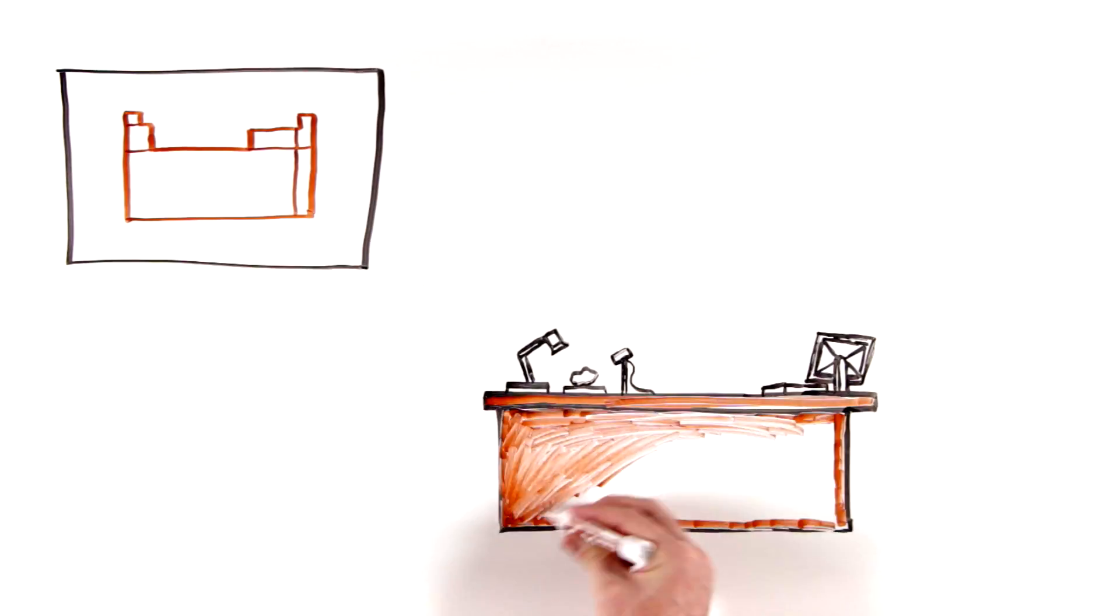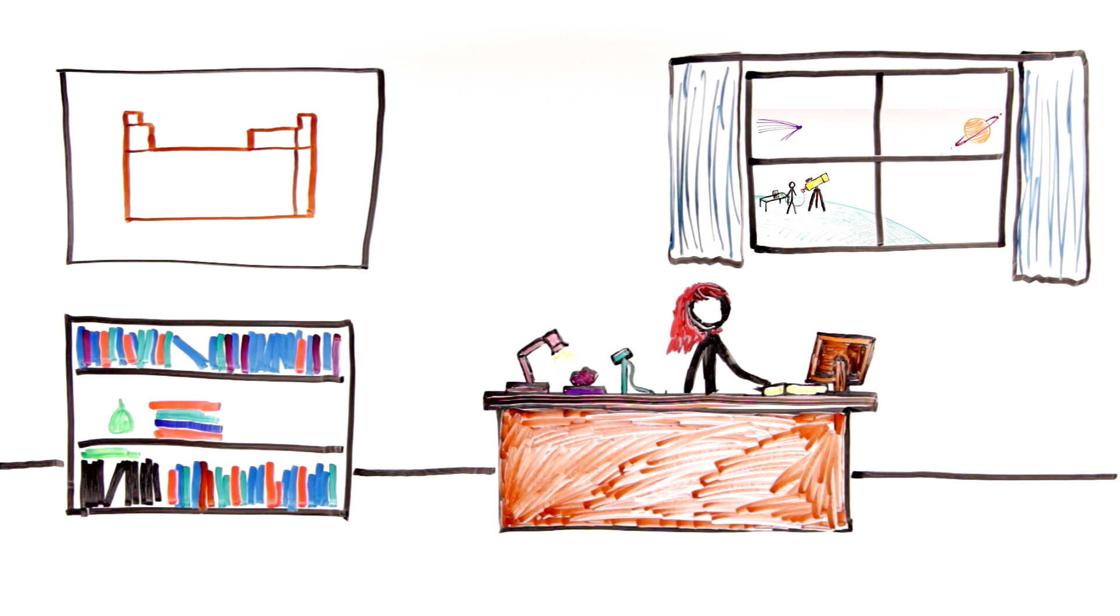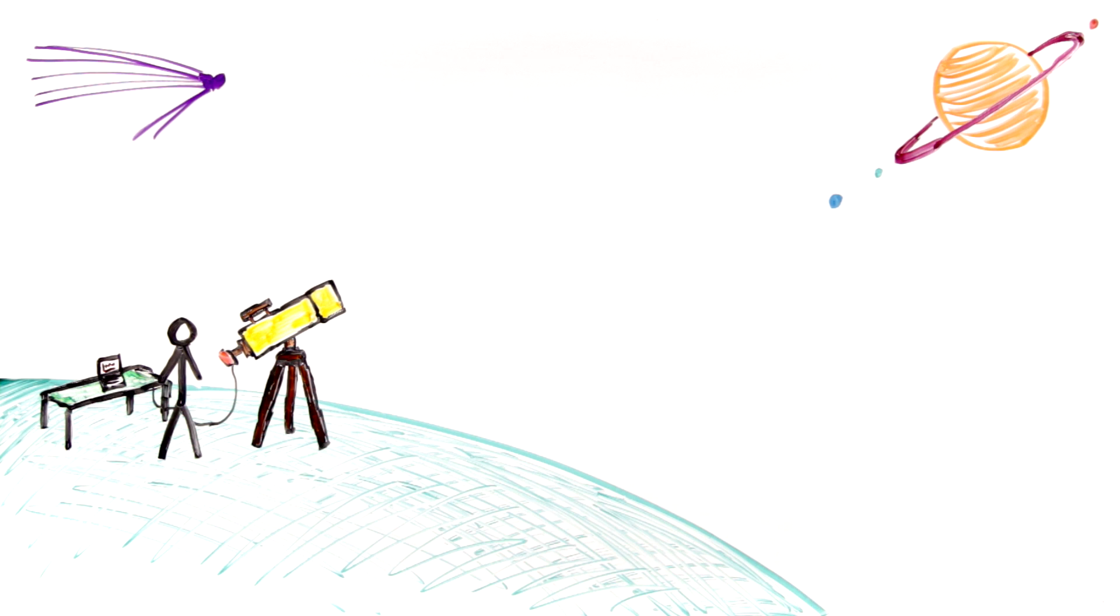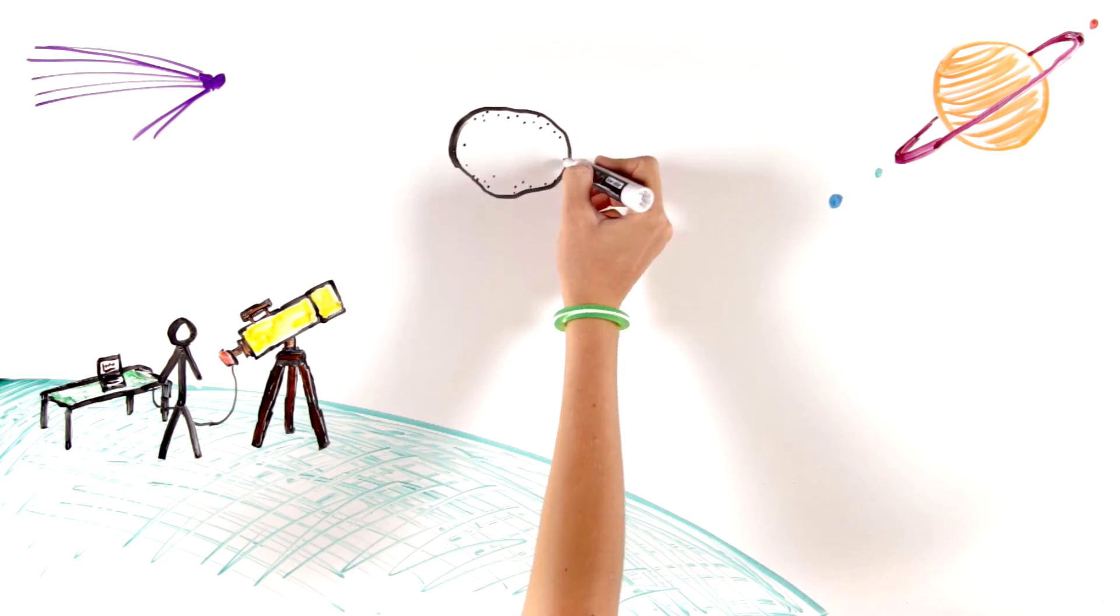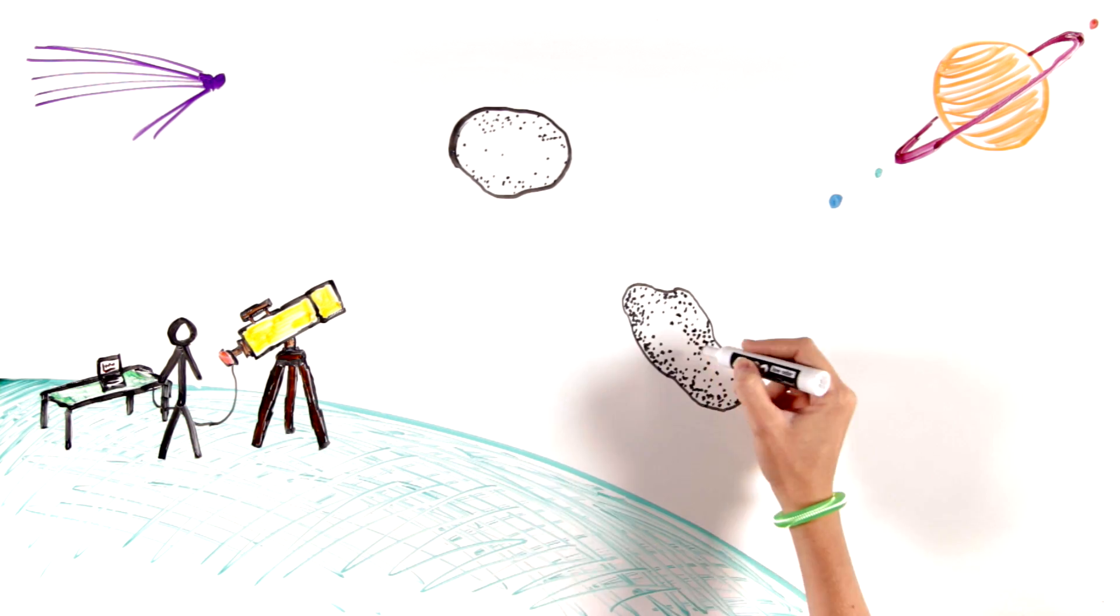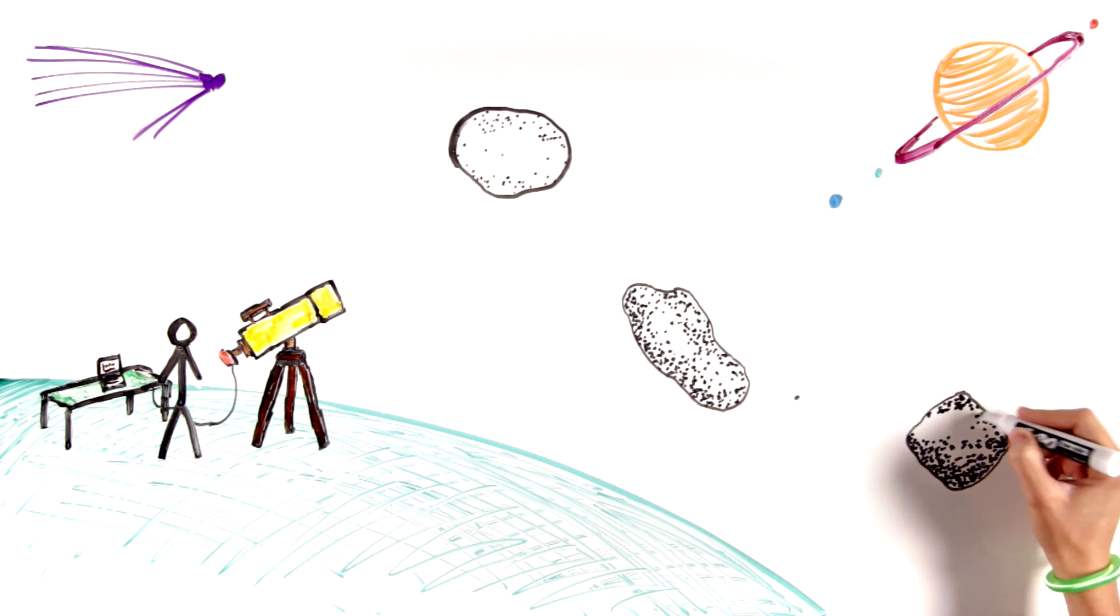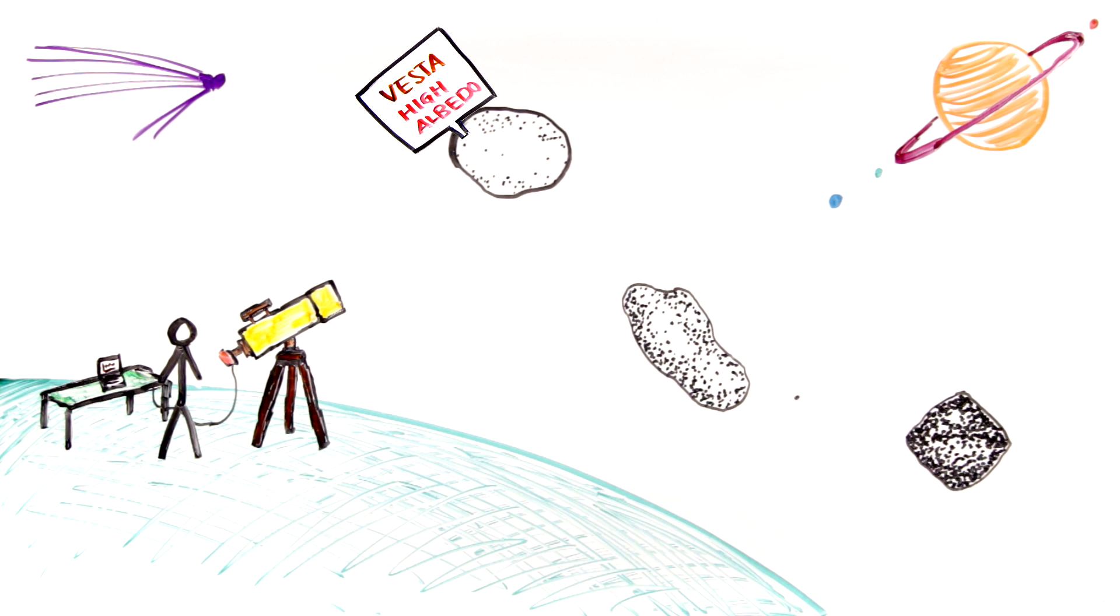Scientists measure the albedos of different, well-known materials in labs. Astronomers measure the albedos of planets, moons, comets, and asteroids through telescopes. They compare albedos and spectral observations of asteroids to learn about asteroid surfaces and composition.